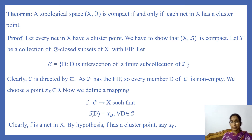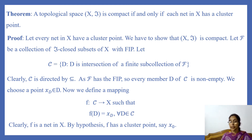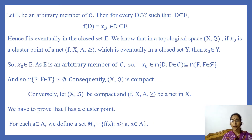Since F has the finite intersection property, every member D of C is non-empty. We choose a point x_D in each D and define a mapping f from directed set C to X such that f(D) = x_D for every D in C. Then f is a net in X. By hypothesis, f has a cluster point; call it x₀.